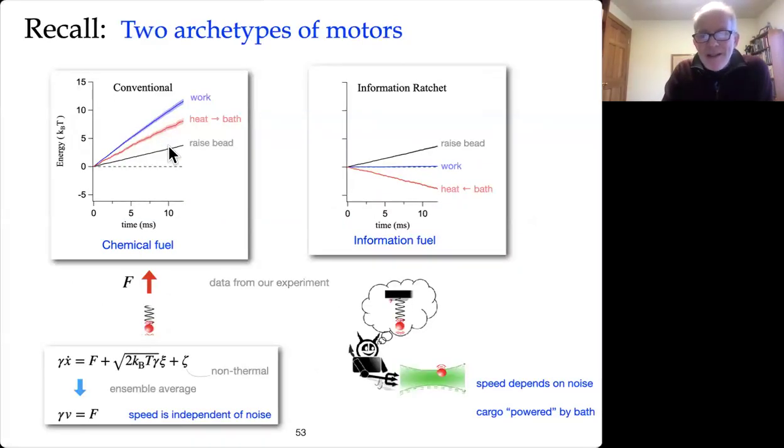In one case, the cargo is just being pulled and we can maybe be a little more precise to say that its speed, for example, if we just think about a simple Langevin equation where you have some external force and then this is the thermal fluctuations, but now you have non-thermal fluctuations. If these are just some kind of Gaussian noise, for example, then you can ensemble average and the speed is independent of the noise. Whereas in our case, the speed I just showed you was depending on the noise. So it's two different situations.